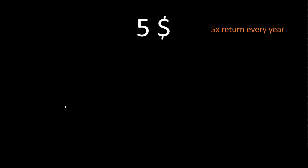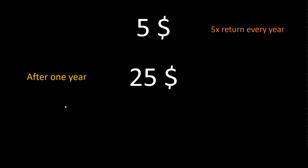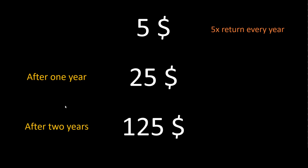Let's say I have $5 and I am putting that in a bank which gives me a 5x return. So if I put $5, it will give me 5x. If I put $7, it will give me 7x return. It's a magic bank — very customer friendly. After one year, I will have $25. After two years, I will have $125 because every year it is being multiplied by 5x.